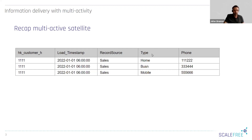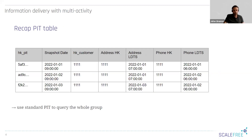In this example, we have three records with the same load timestamp. To make each record unique, we have a type code: Home, Business, and Mobile — one for each phone number. Now we want to carry this data out of the multi-active satellite, and you could use a standard PIT table to do so.